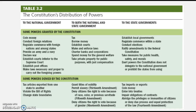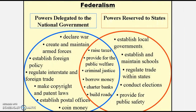In terms of the Constitution's distribution of powers, there are powers given directly to the national government, powers given to both the national and state governments, and powers given just to the state governments. At the same time, there are powers denied by the Constitution to the national government, powers denied to both levels, and powers denied specifically to the states. The Constitution is very specific in that regard as to powers granted to each level of government.